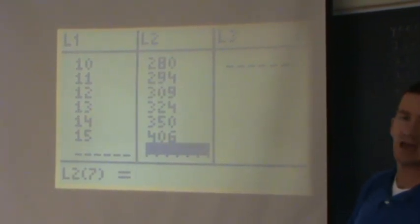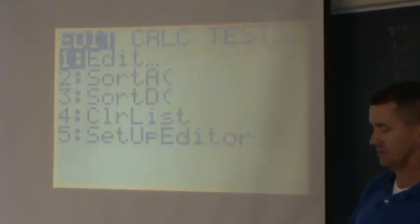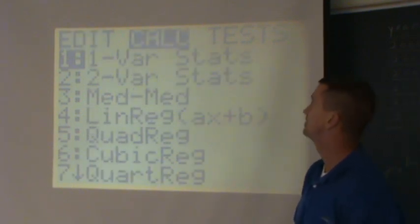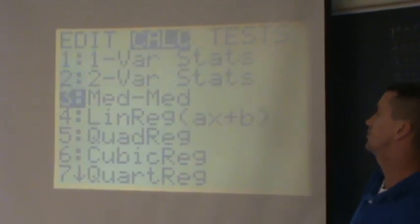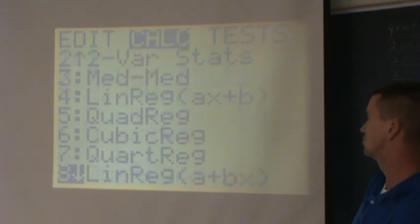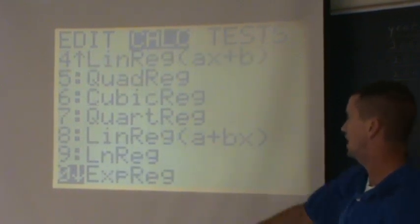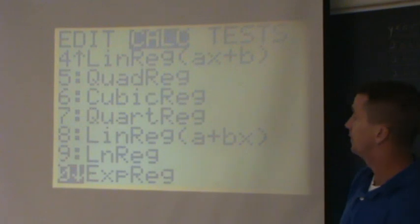I'm gonna go back to the stat button. This time, I'm gonna arrow over to calc. I'm gonna go down this list, I'm looking for exponential regression. There it is, right there, everyone. Exponential regression, I'm gonna hit enter.